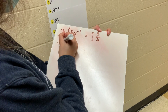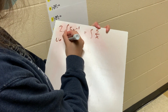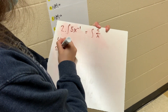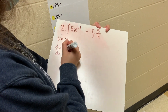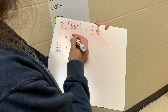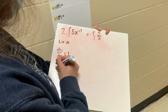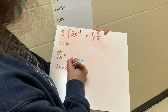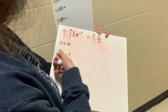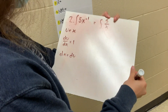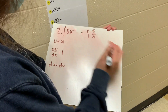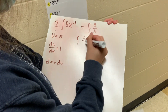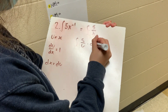So first u is equal to x, and then after that we'll do the derivative, which is du over dx is equal to 1, which is the derivative of x. And then you'll do dx is equal to du, because when you cross multiply, it turns into du. And after that, we'll put it back into the equation, which is 5 over u times du.